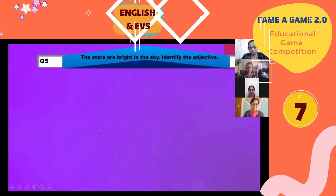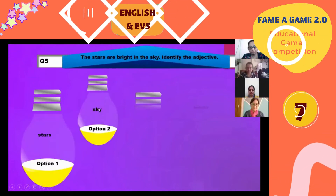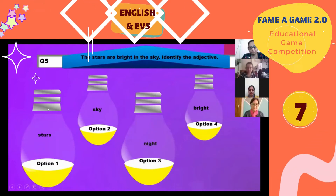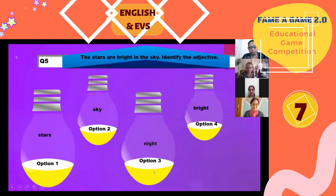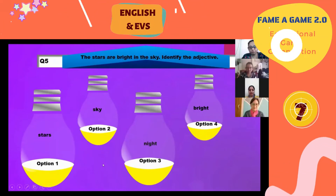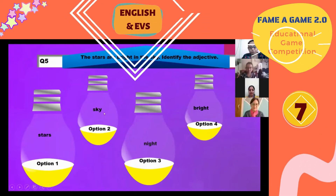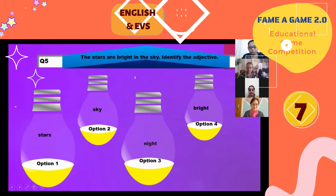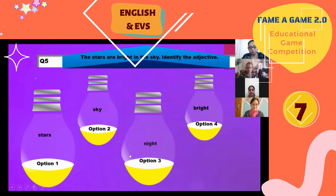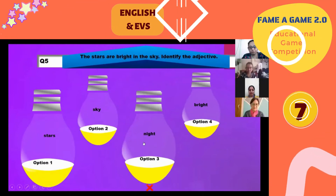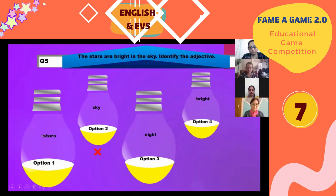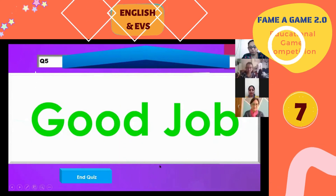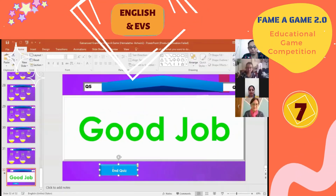Next question: 'The stars are bright in the skies — identify the adjective.' The animation is chosen based on the question. We have around 20 to 25 different formats ready-made, and for each topic you just type the question and change the options in the template. 'Sky' and 'stars' are wrong; 'bright' is the adjective — Good Job! Then we end the quest.